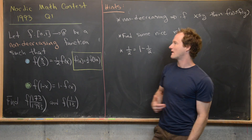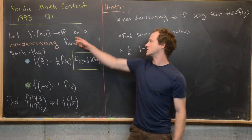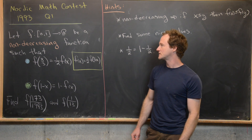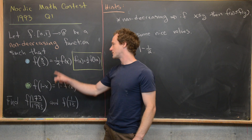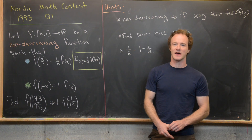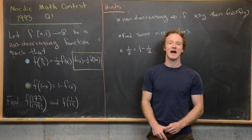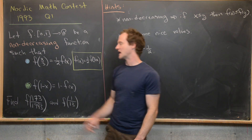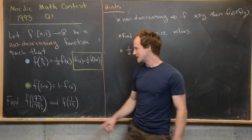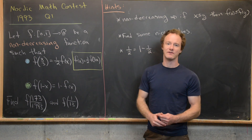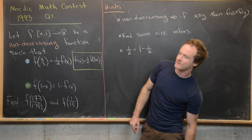Let f go from the closed interval zero to one on the real line to the real numbers — so it takes on real values — and be a non-decreasing function such that f(x/3) = (1/2)f(x). Notice that's exactly the same as saying f(x) = (1/2)f(3x), just by replacing x with 3x. Then next we have f(1 − x) = 1 − f(x).